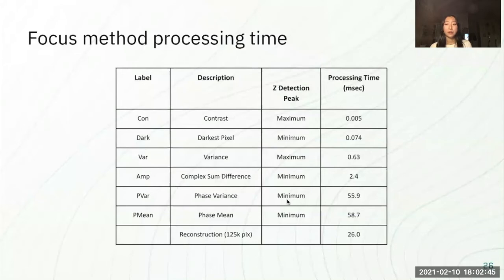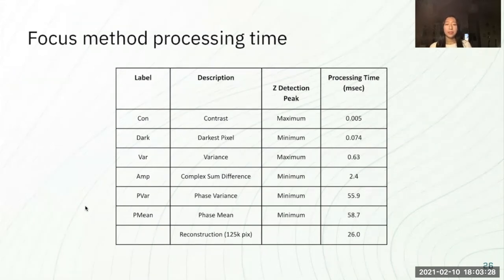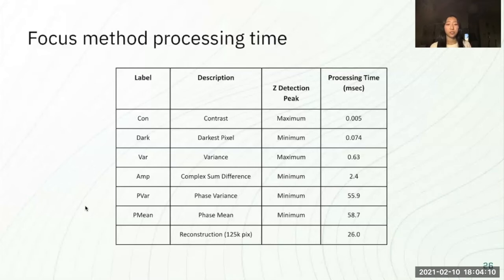First, we're going to look at the processing time. The contrast and the darkness were super fast and efficient, which comes unsurprisingly given how simple those methods were — just taking the darkest pixel or subtracting the darkest and lightest pixel. We saw the variance and amplitude did similarly and still in a pretty fast range. Then we had the methods that worked on the unwrapped phase image. Ninety percent of the time for those images was spent unwrapping the phase image, which was a real time sink. Those took much longer in comparison to the other four methods.